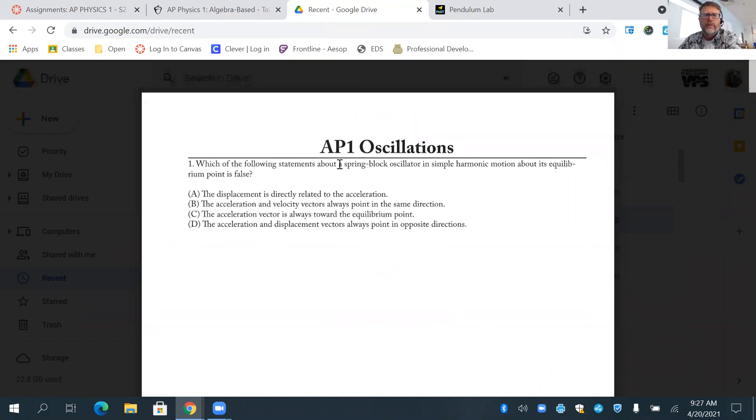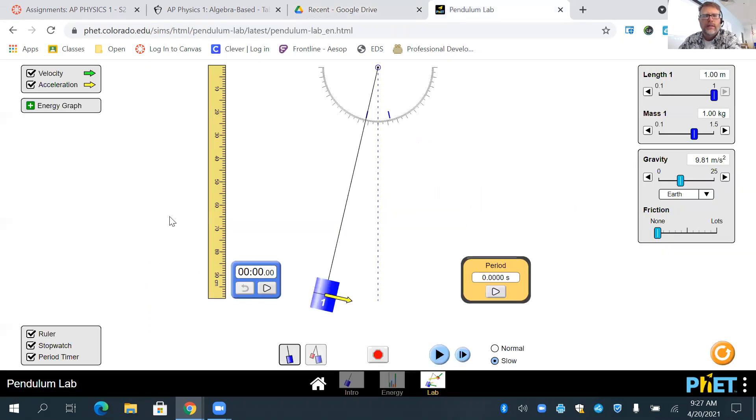So first of all, what's the following statements about the spring block oscillator and simple harmonic motion about equilibrium points is false? They're talking about directions of acceleration and equilibrium points. So that's why we had this lab.